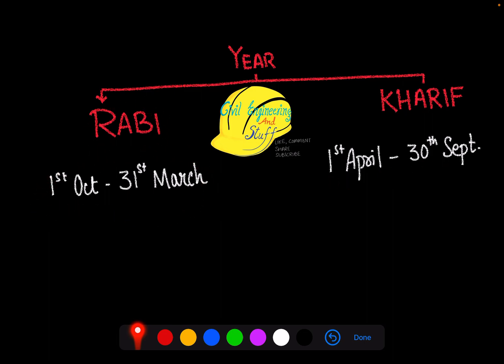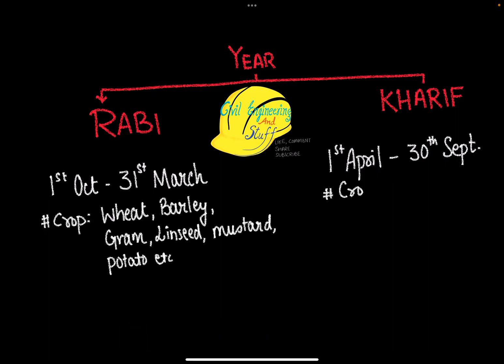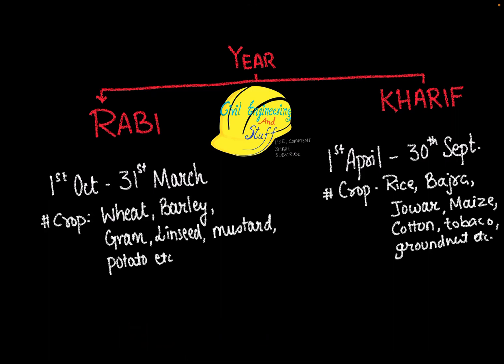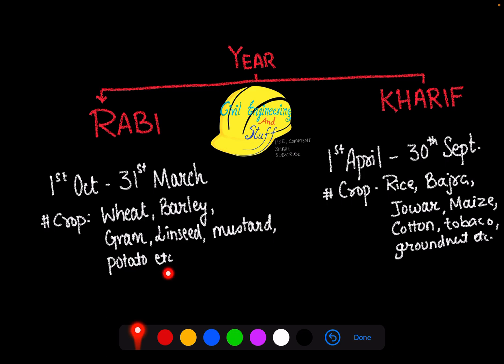The crops that are grown in the Rabi season include wheat, barley, gram, linseed, mustard, potato, etc. The crops that are grown in the Kharif season are rice, bajra, jawar, maize, cotton, tobacco, groundnut, etc. If we observe this time period, 1st April to 30th September is somewhat warmer.